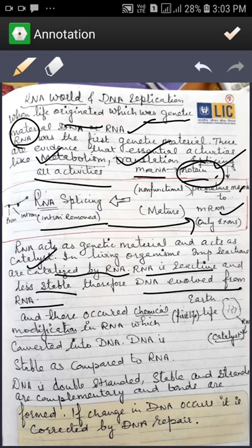So earlier life, it was having RNA as a genetic material when life originated on earth. So there the transformation in RNA took place and there was a formation of DNA. DNA is stable as compared to RNA, DNA is double-stranded, whereas RNA is single-stranded.